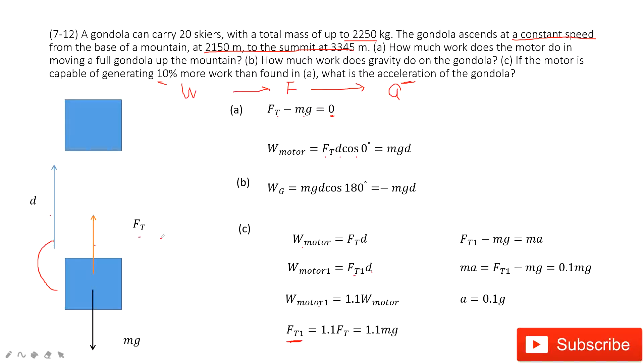Now in this case, this tension becomes 1.1 mg. It will not keep balanced because the gravity is still mg. So we apply Newton's second law. This tension minus the gravity equals mass times acceleration. So this Ft1 becomes 1.1 mg. So in this way, we can get the acceleration 0.1 g.